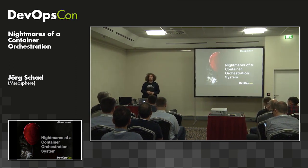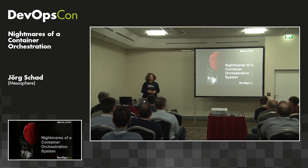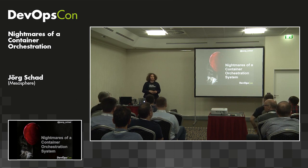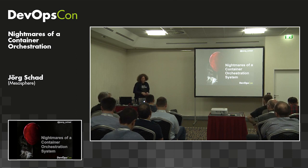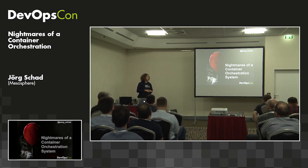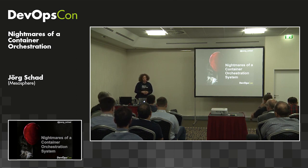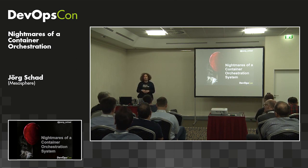A short raise of hands: given your experience level, who is operating some kind of container orchestration — Kubernetes, DC/OS — in production? How many of that is Kubernetes? Fair distribution. I'll try to keep it general, so most of this should apply to any container system you're running. I picked some more advanced topics and some basic topics.